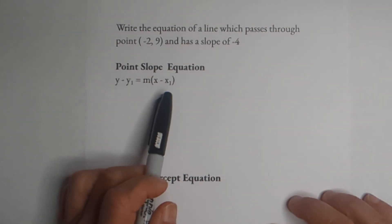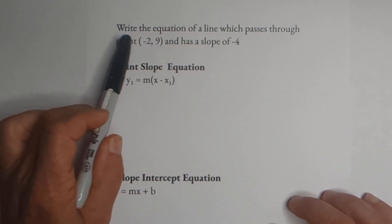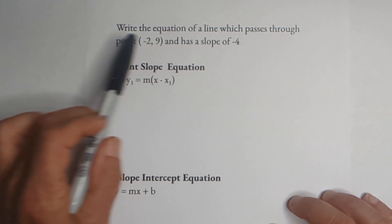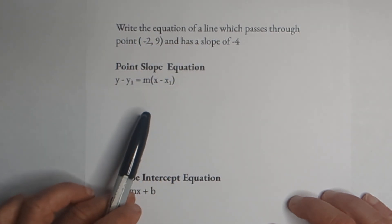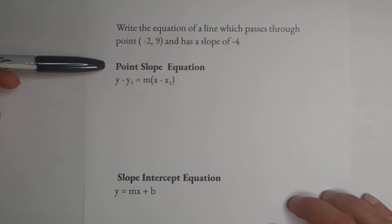Welcome to Moving Math and Science. In this video, let's go over how to write the equation of a line which passes through the point (-2, 9) and has a slope of -4. We're going to go over how to write it in point-slope and then also in slope-intercept form.